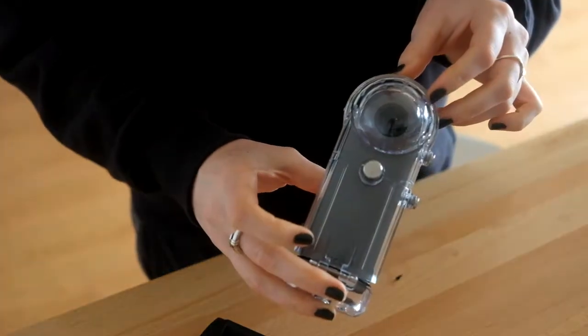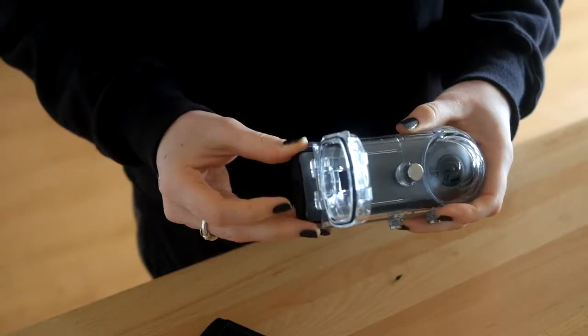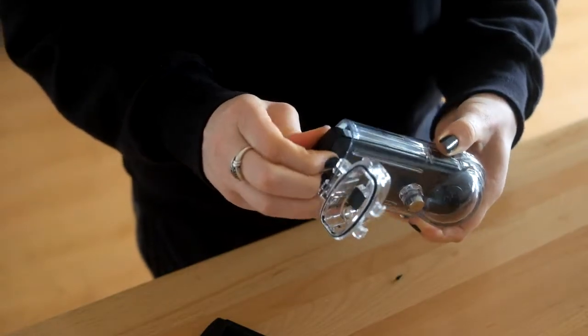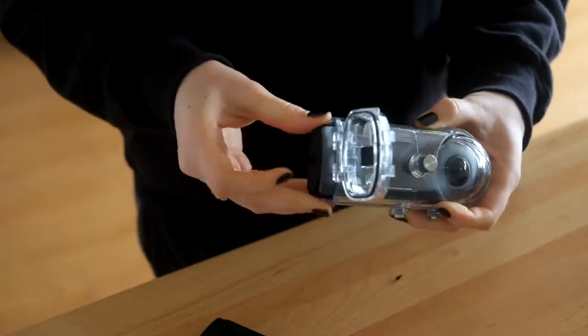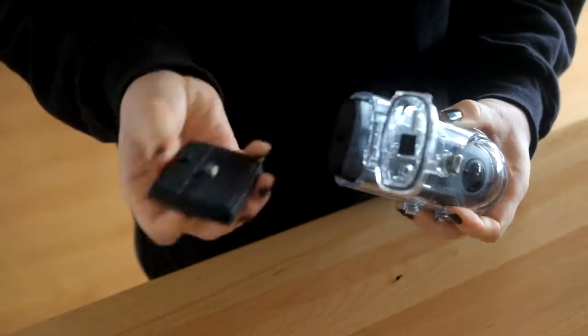So this is the Ricoh Theta 360 underwater housing, and I found it insanely difficult to get the camera out when I tried. Even at TSA they couldn't get it out and were very displeased.